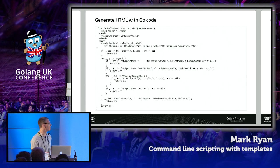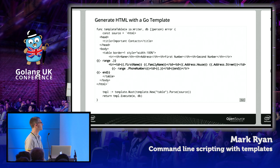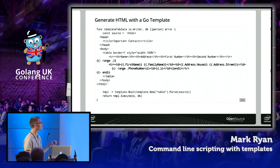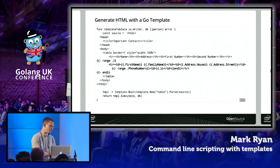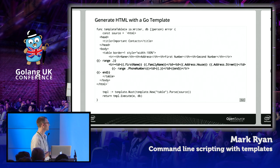There must be a better way to do this, and there is. In Go, you can do this using the template language. Here is another example producing a similar HTML document, but using the template language. This is a lot simpler — there's a lot less code. It's kind of obvious what this function does. You can even determine the structure of the document just by looking at it. You can see some funny directives delineated by opening and closing double curly braces — these are the template directives.